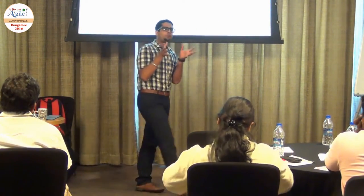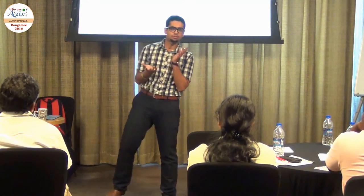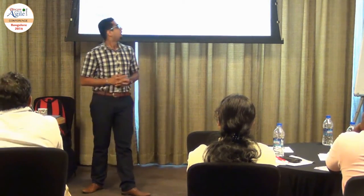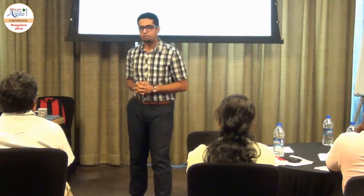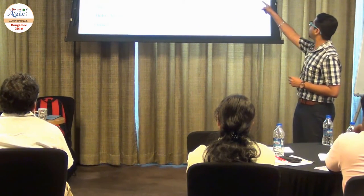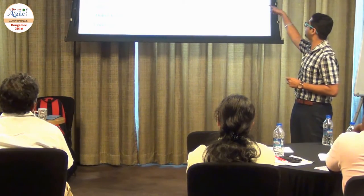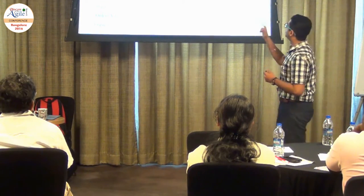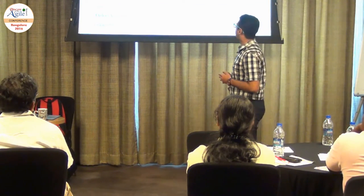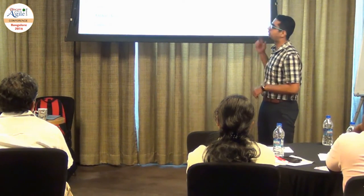Now we have seen a bit of introduction and some model of what was happening. Let's see a bit of data as well. So I have come up with a few metrics. Staff at stall: there were 3 to 5 for Dine Out, 5 to 7 for Swiggy, and 3 to 5 for Tiny Owl. The stall positions were 2 each for Dine Out and Swiggy, and 1 for Tiny Owl. The number of days the stalls were put up were 2 each for Dine Out and Swiggy, and 1 for Tiny Owl.